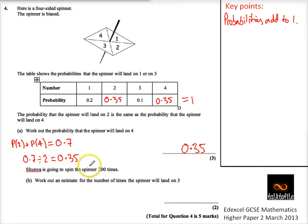Second part, part B says: Shuna's going to spin the spinner 200 times, work out an estimate for the number of times the spinner will land on three. So she's going to spin it 200 times.